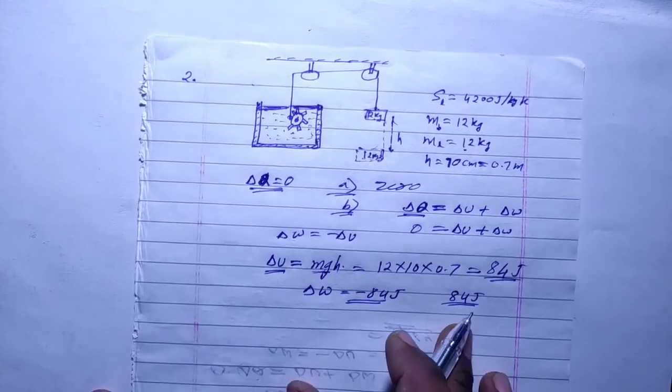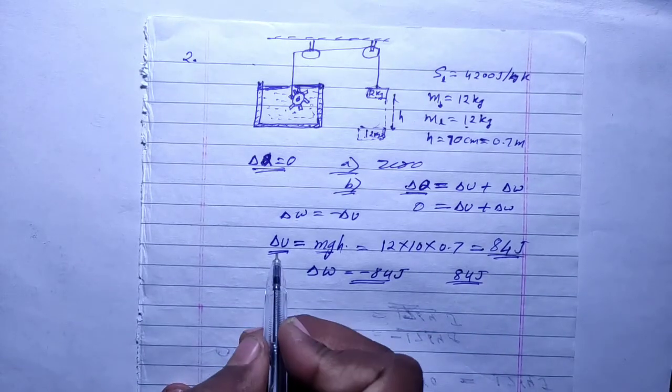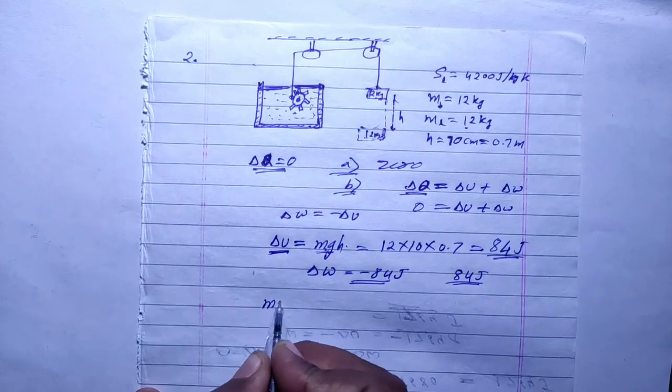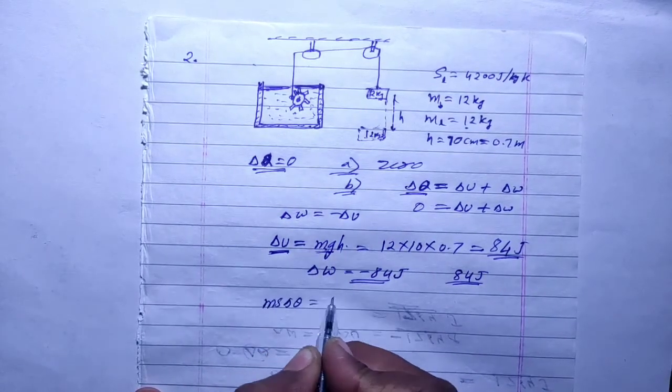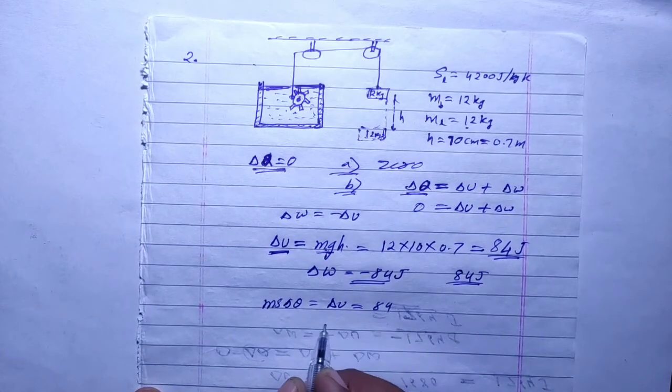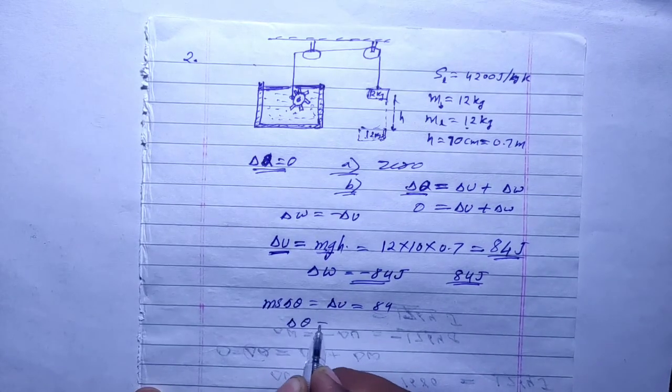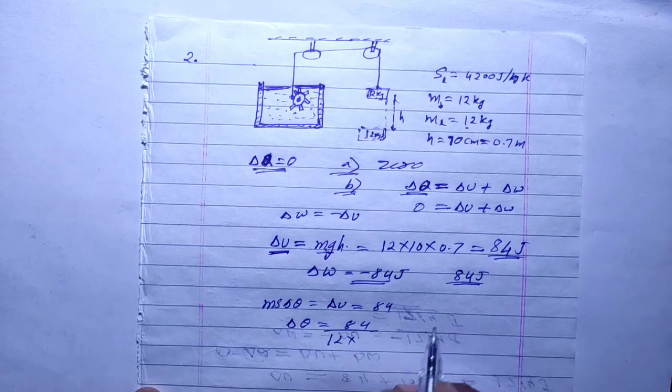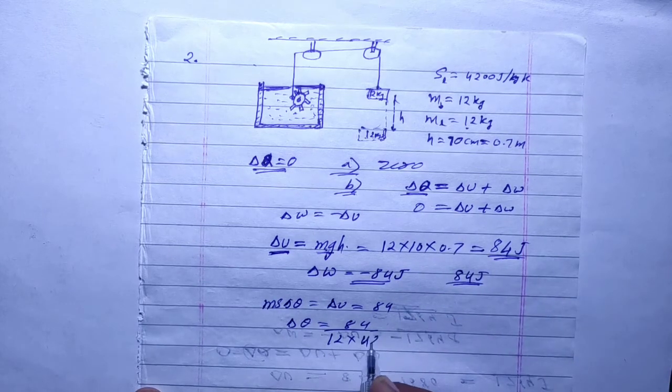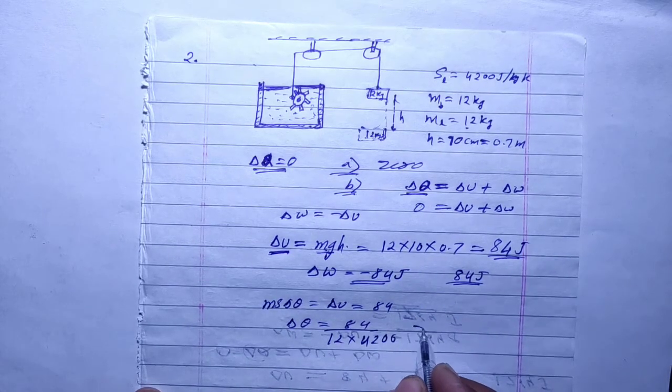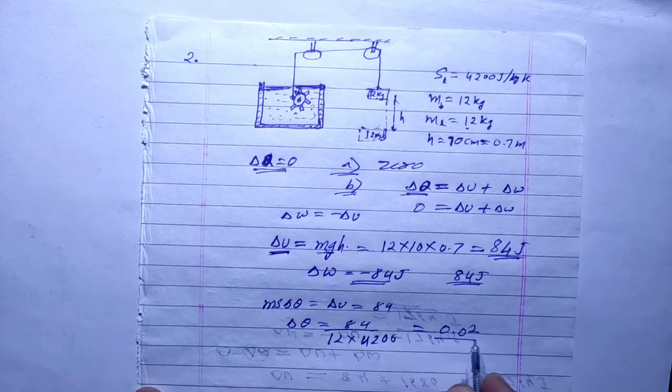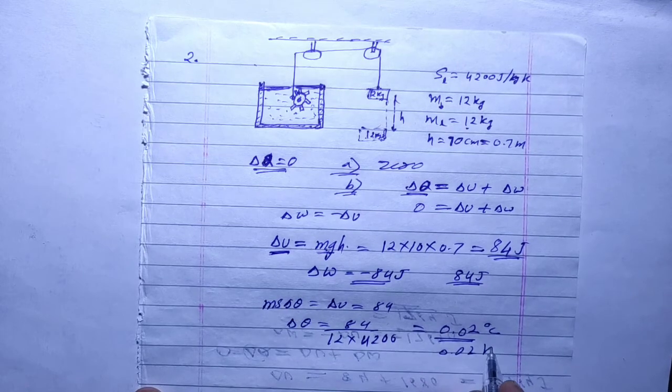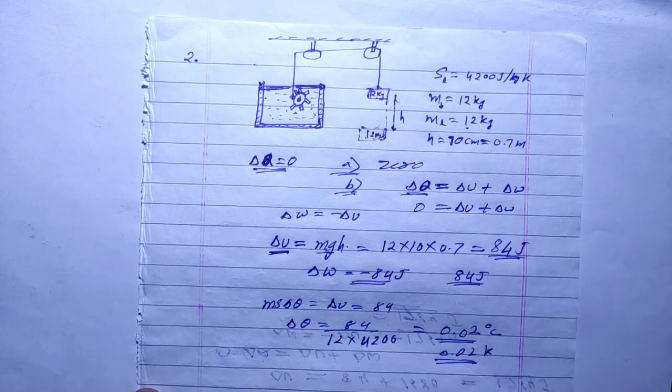Next, for rise in temperature, internal energy MGH equals mass times specific heat times delta theta, which is equal to 84. So delta theta equals 84 divided by 12 times specific heat capacity of water or liquid, which is 4200. Solving this gives 0.02 as your change in temperature in degrees Celsius or Kelvin, not Fahrenheit.